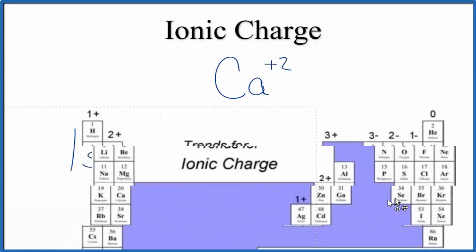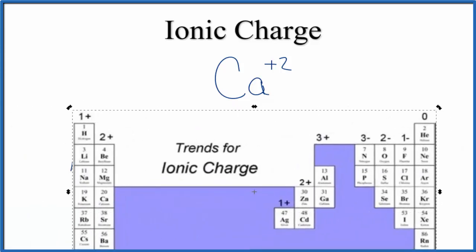So you can use the periodic table and look at the trends to find the ionic charge for calcium, or you can look at the electron configuration. Either way, the ionic charge for calcium, Ca, is 2 plus. This is Dr. B, and thanks for watching.